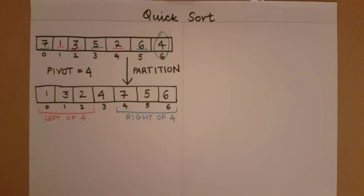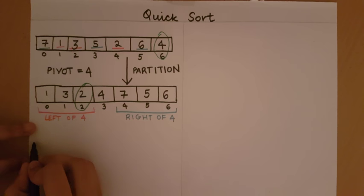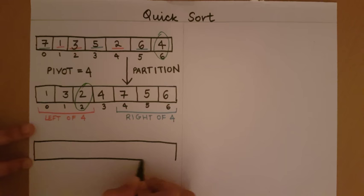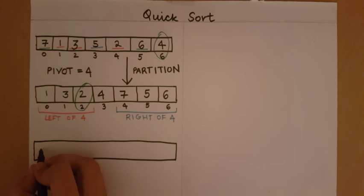Let's first apply the partition to the left of 4. When applying partition to the left of 4, the pivot chosen will be 2, since 2 is the last element of that subarray. On applying partition to the left of 4, all elements less than 2 will appear to its left and those greater than 2 to its right. So 1, which is less than 2, appears to its left, then the pivot 2 itself, and 3, which is greater than 2, to its right.